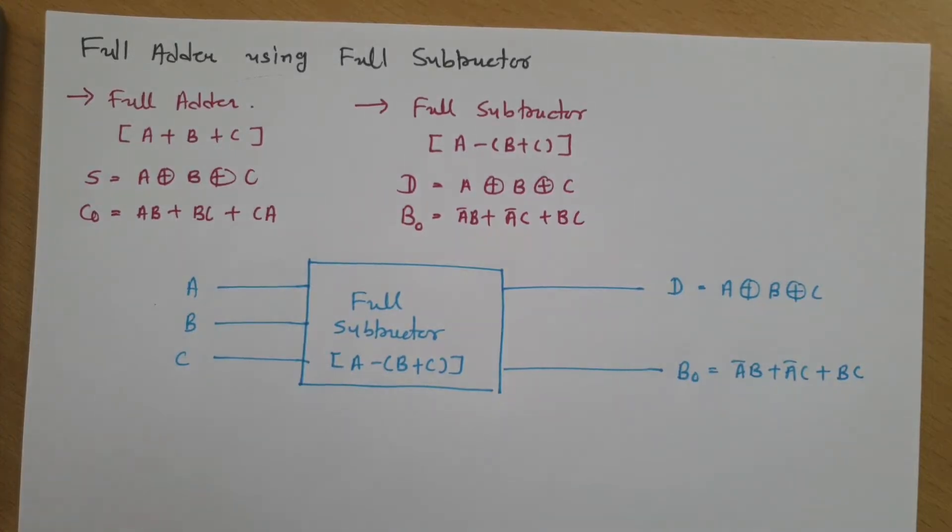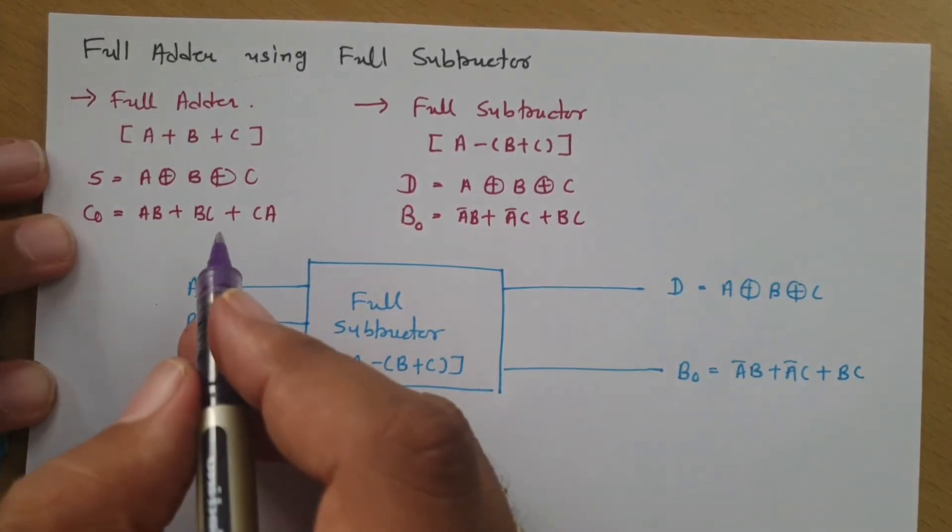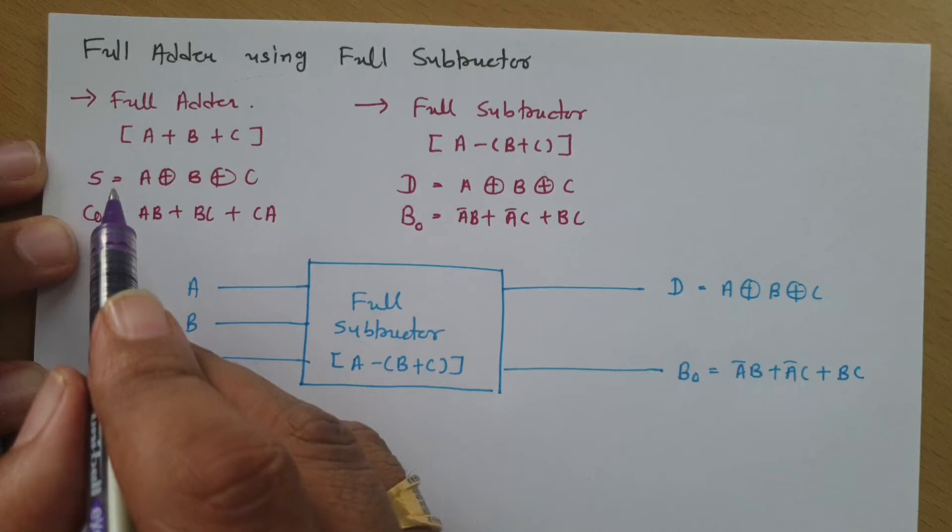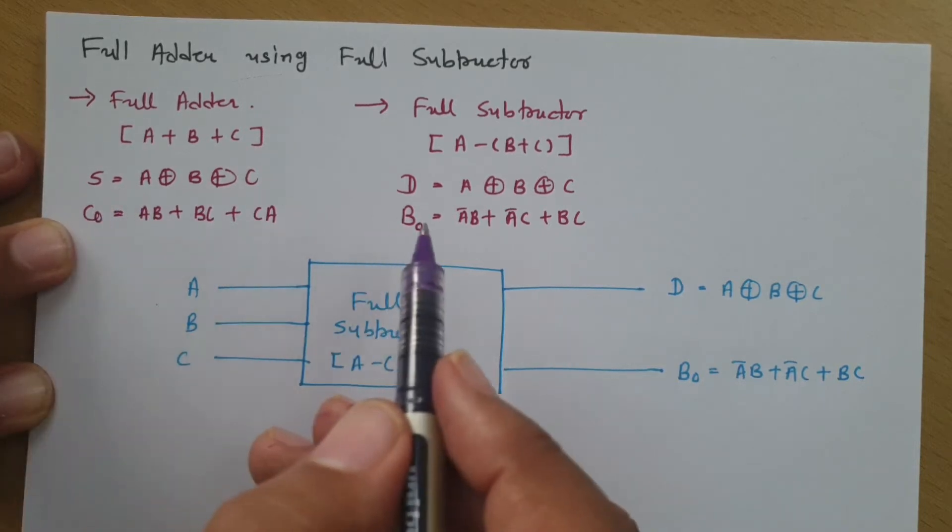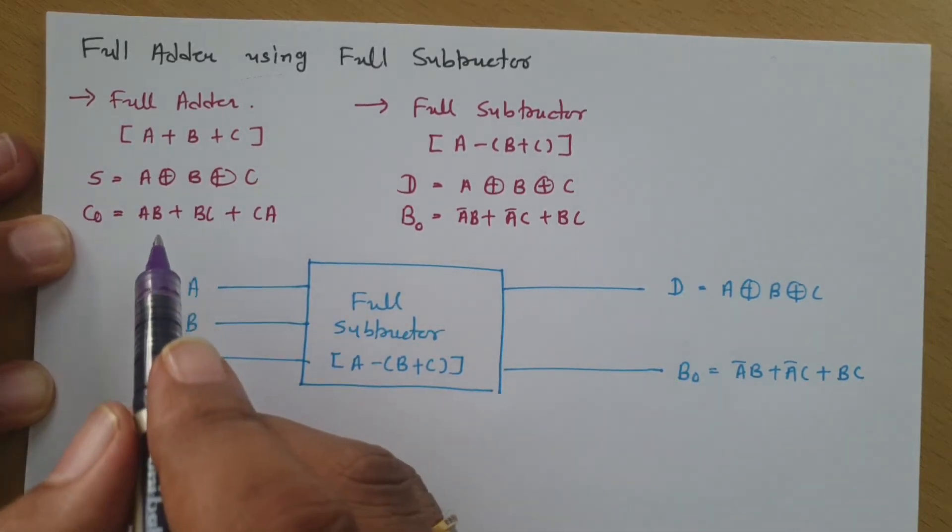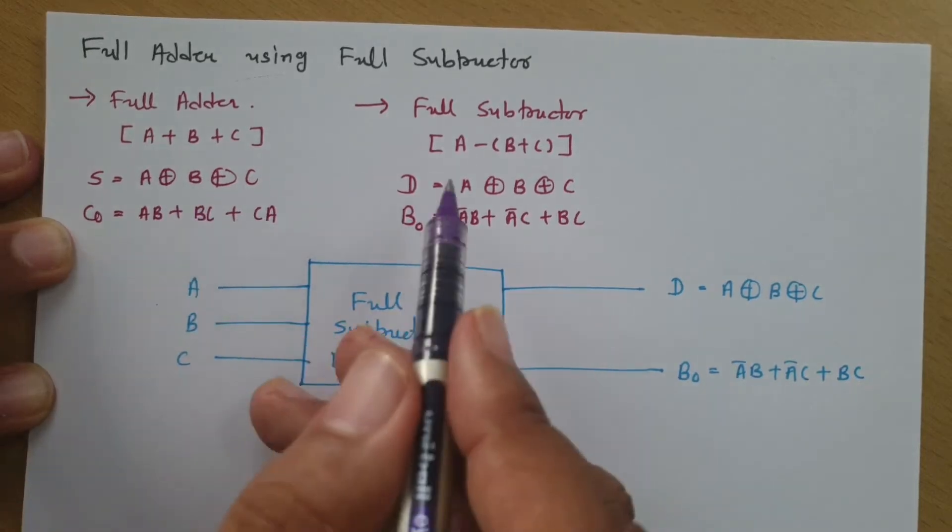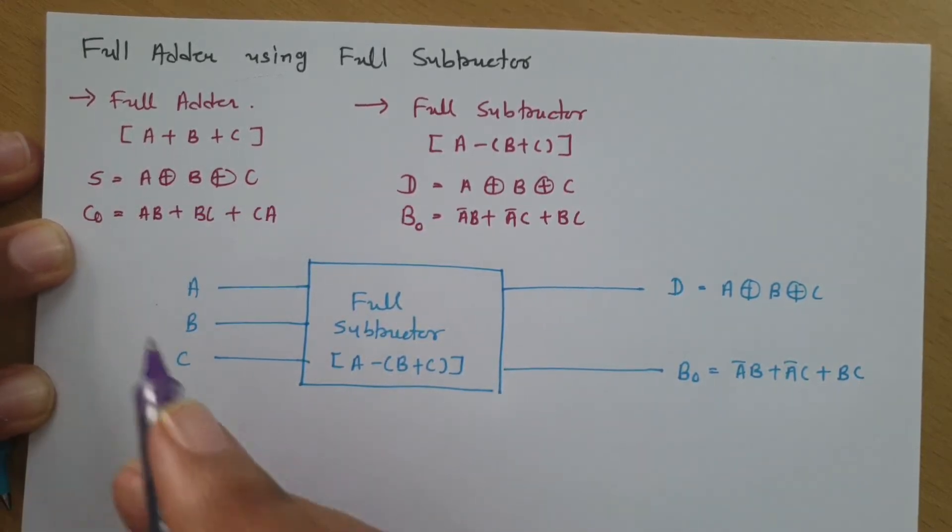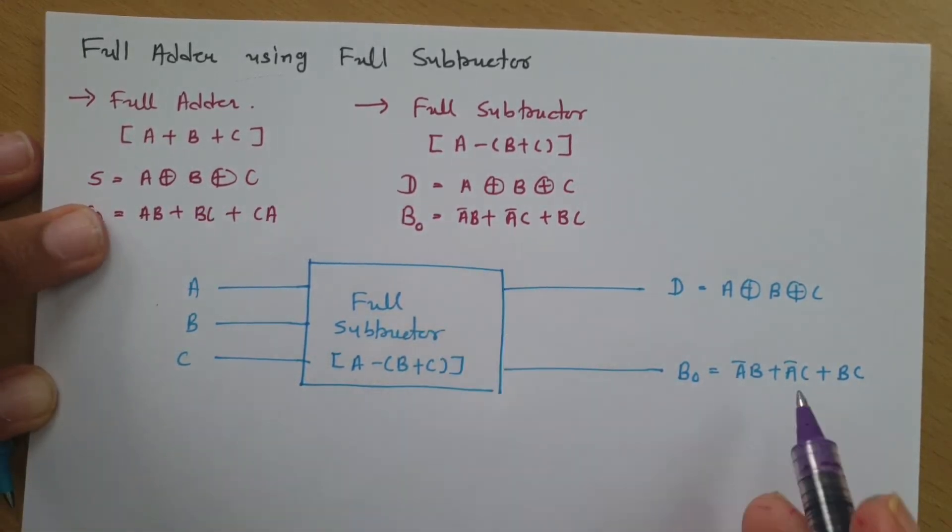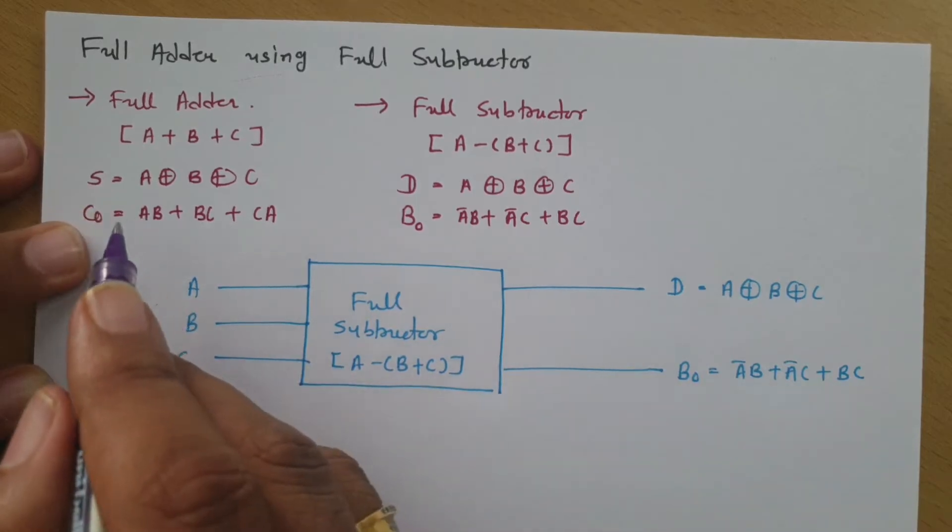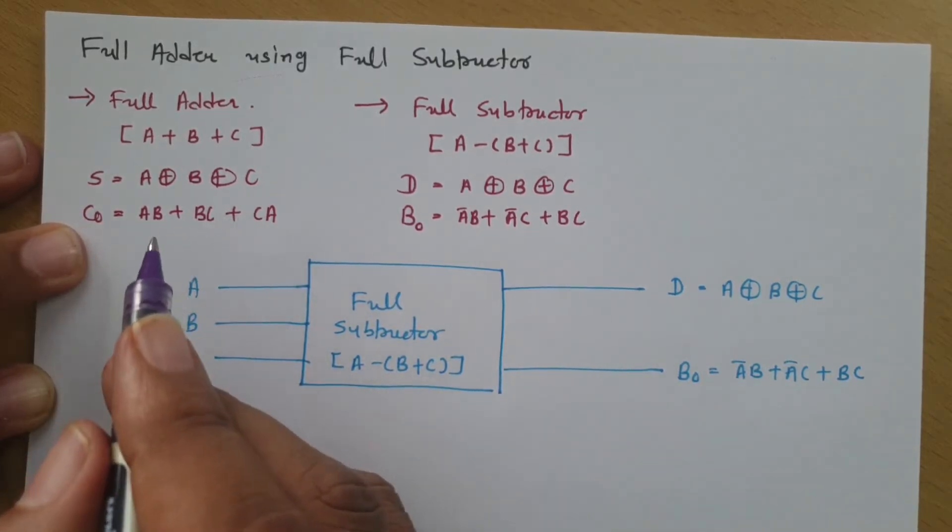Now, in this if you observe what is the difference? So, difference is there in carry and borrow only. And sum and difference are same. So, if you observe borrow difference, then borrow difference is A bar B plus A bar C plus BC that is there in borrow while in carry it is AB plus BC plus CA.